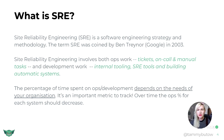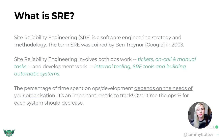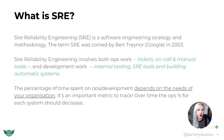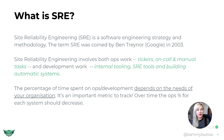Site Reliability Engineering involves both ops work — tickets, on-call, manual tasks — and development work — internal tooling, SRE tools, and building automatic systems. The percentage of time spent on ops and development work depends on the needs of your organization. It's an important metric to track. Over time, the ops percentage of each system should decrease.